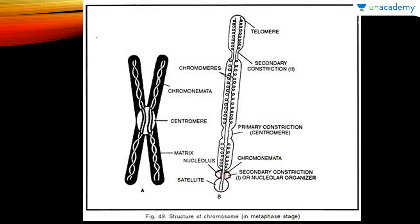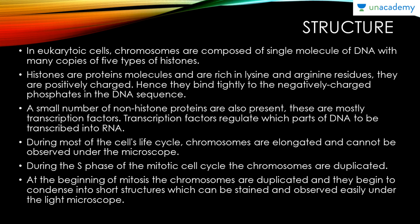Looking at the diagram, we have the chromanemata in the center, the centromere connecting the two arms on both sides, and the matrix surrounding the chromanemata. In eukaryotic cells, chromosomes are composed of a single molecule of DNA along with many copies of five types of histones, which are protein molecules.